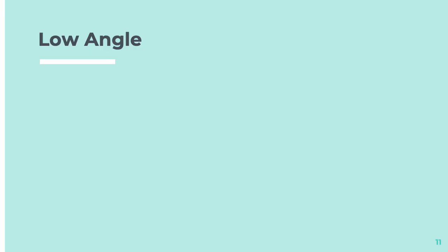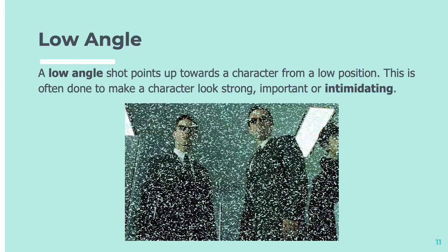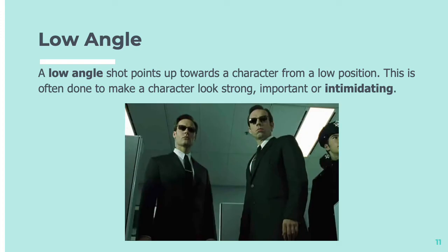And low angle, as I'm sure you've guessed, is just the opposite. Low angle shots point up towards the character from a position that's low down somewhere, and this is done to make a character look strong, important, or intimidating. You can see here the camera's low down and it's pointing up at the men's faces.